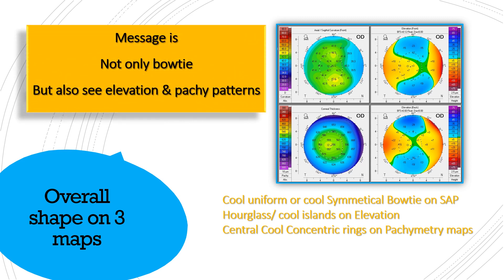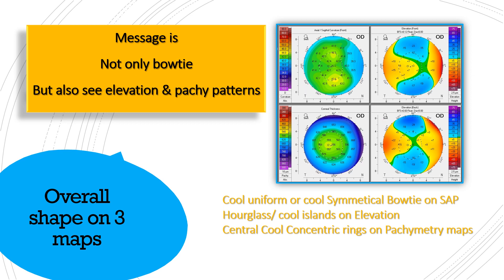The key message from this lecture is that the bow tie is not the only normal pattern. You also have normal patterns on elevation and pachymetry maps. If you see a normal or abnormal pattern on a sagittal map, confirm it with elevation maps and the pachymetry map. It is not just the bow tie which is the normal pattern — it's a cool symmetrical bow tie which is the normal pattern, and also the cool uniform pattern.